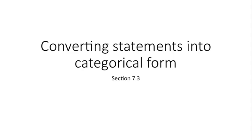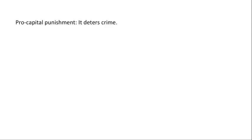I'm going to be covering section 7.3, which is about converting statements into categorical form. Here's the idea: we have an argument, like somebody arguing for capital punishment, arguing in favor of it on the grounds that it deters crime.